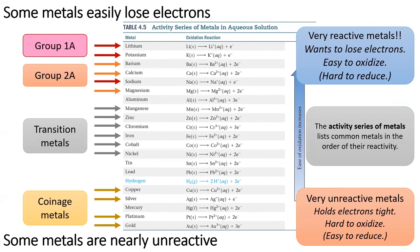At the bottom of the list, we have the coinage metals, which are extremely unreactive. This is why humans have used these metals for money and for conductive wiring.